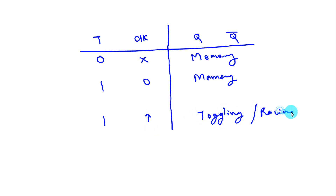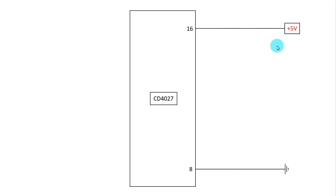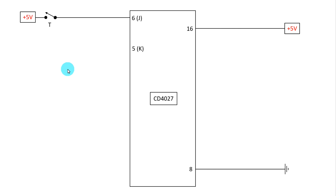This is our T flip-flop. Now let's see the circuit diagram. Here is our IC CD4027. Pin 16 should be connected to the positive rail and pin 8 to the negative rail. Pin 6 is J — we will take a switch to provide signals and call it T. One pin of the switch is connected to pin 6 and the other pin to the positive rail. Pin 5 is K, and we will connect both pin 6 and pin 5 together.